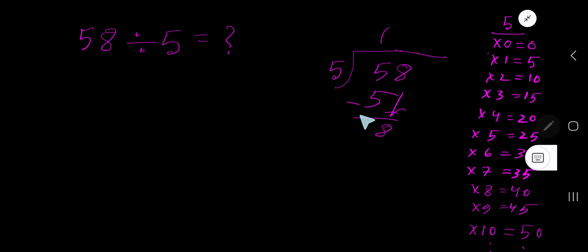08 means 8. 5 goes into 8 how many times? 2 times would be 10, which is greater, so one time. 1 times 5 is 5, subtract to get 3. This 3 is the remainder, so we have 11 remainder 3. If you want to write your answer in decimal form,